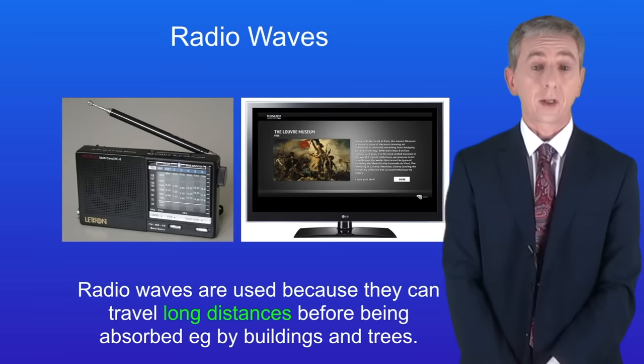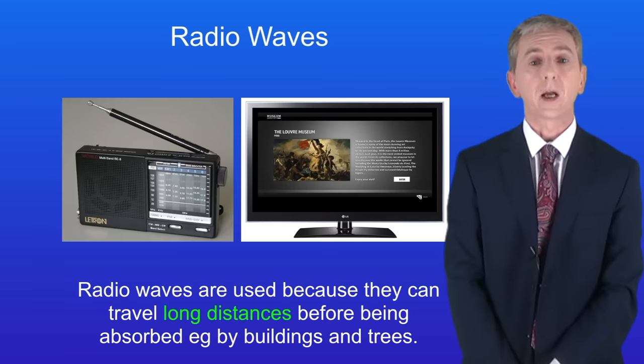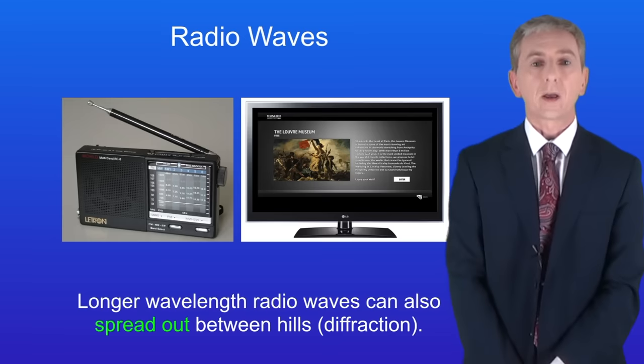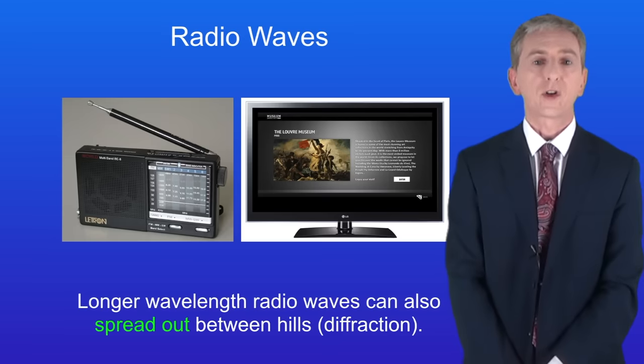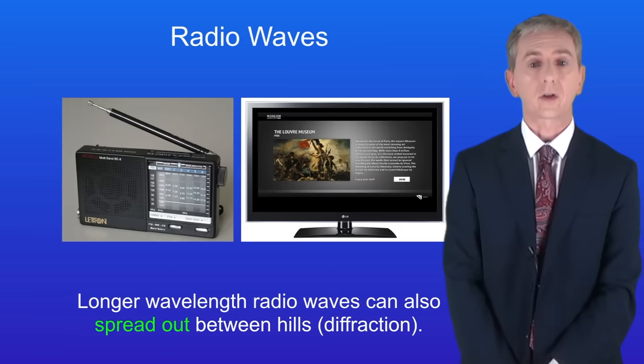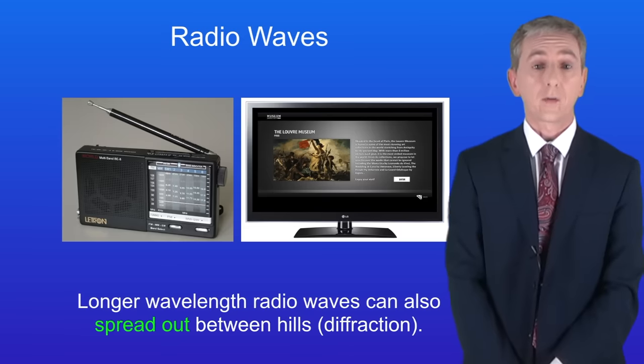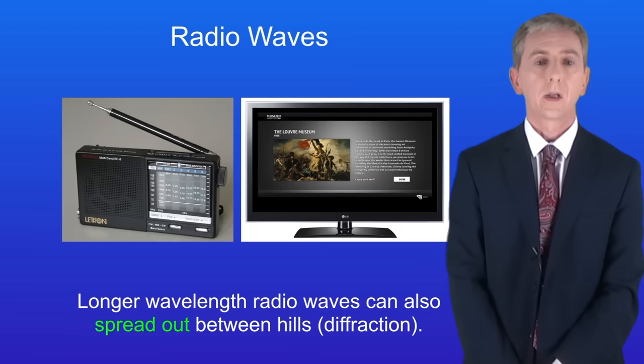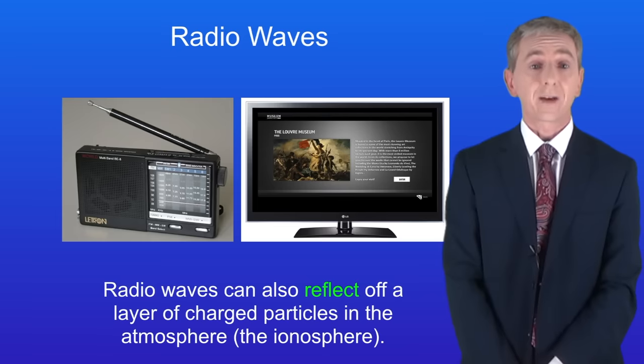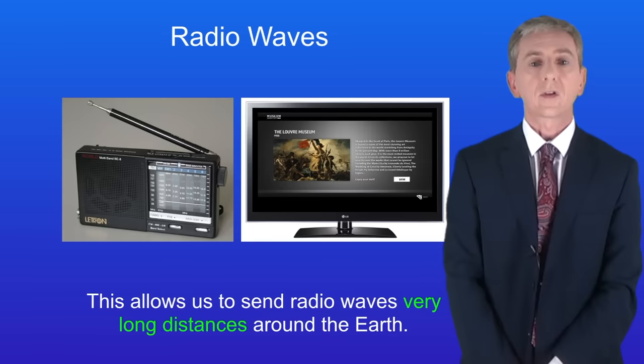Now radio waves are used because they can travel long distances before being absorbed, for example by buildings and trees. Longer wavelength radio waves can also spread out between hills and that's called diffraction. I should point out that the word diffraction is not on your specification. Radio waves can also reflect off a layer of charged particles in the atmosphere called the ionosphere. This allows us to send radio waves very long distances around the earth.